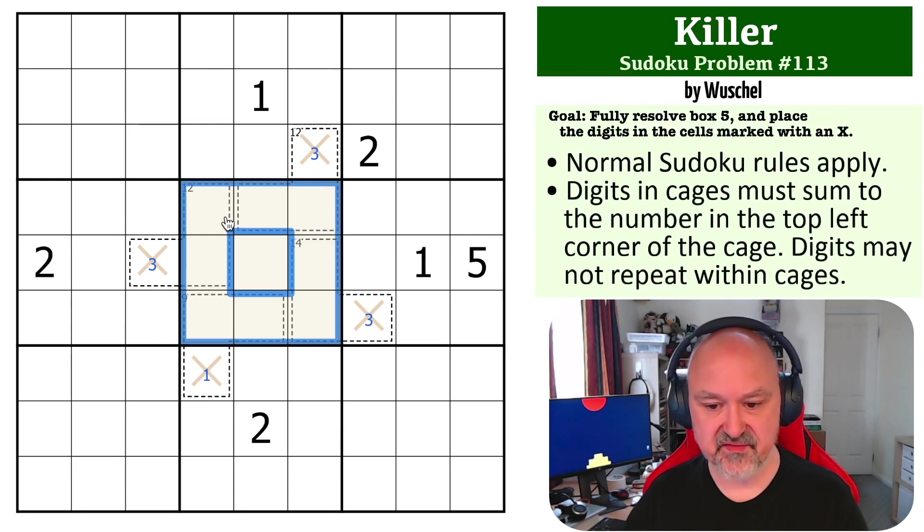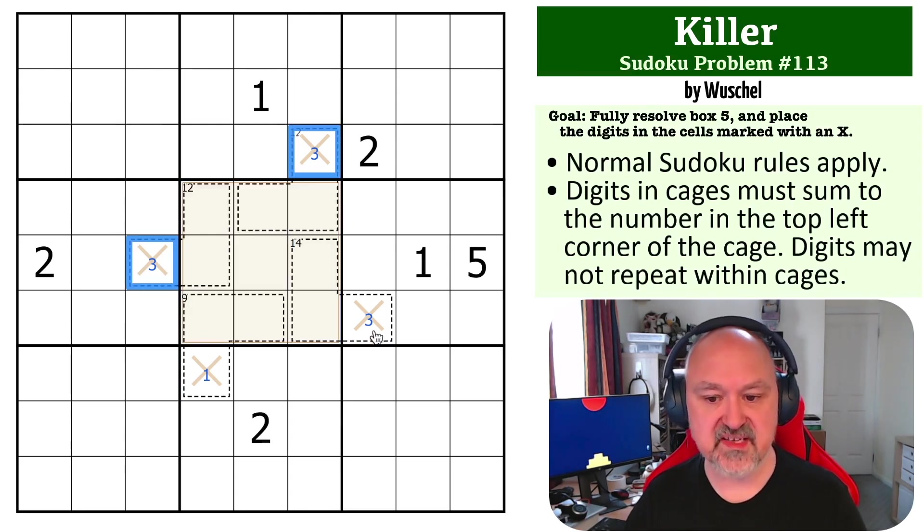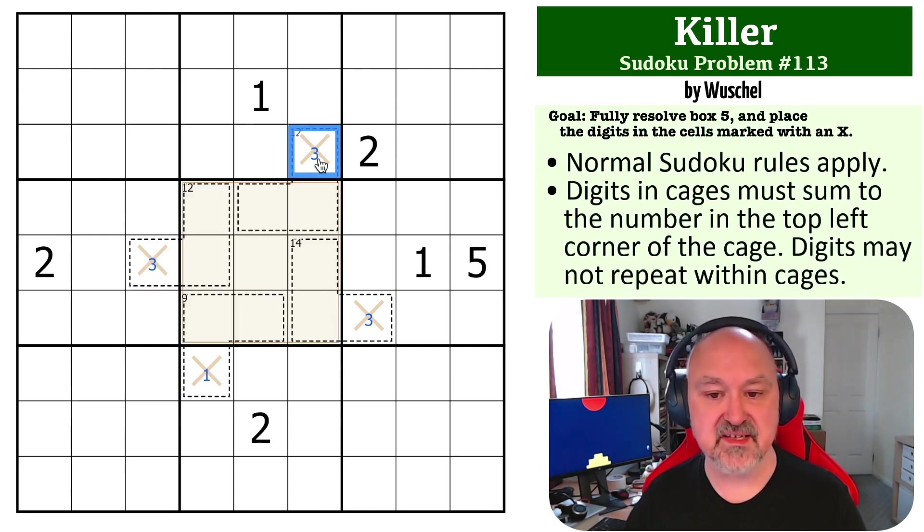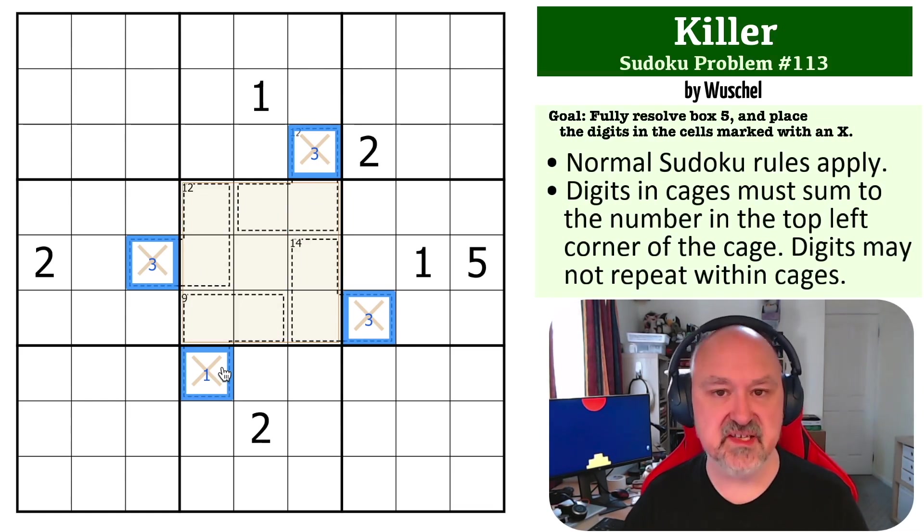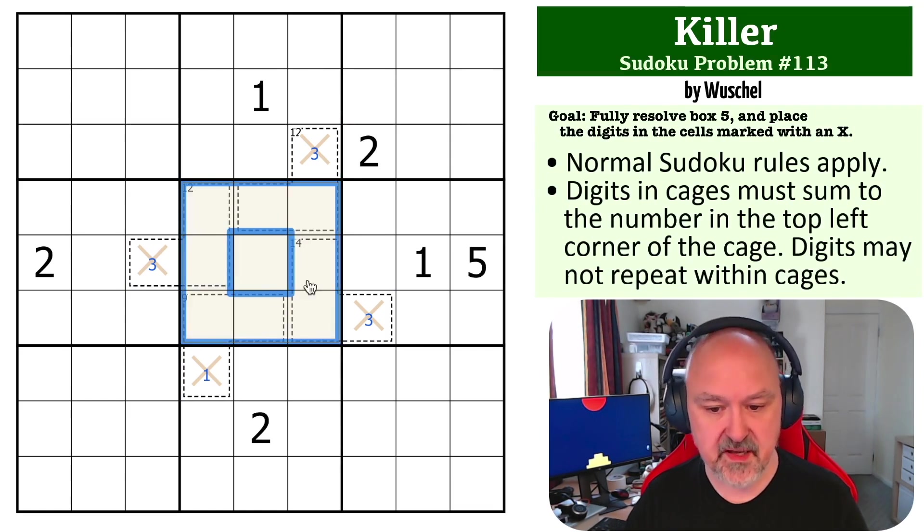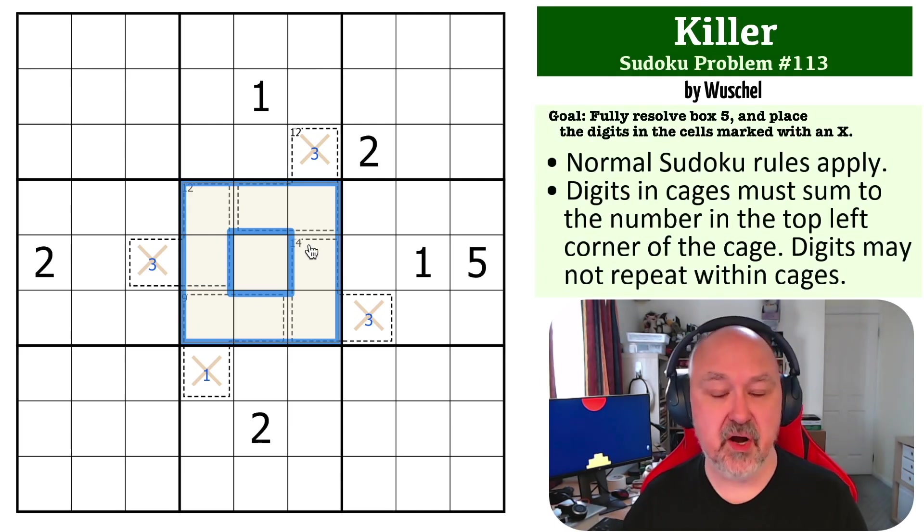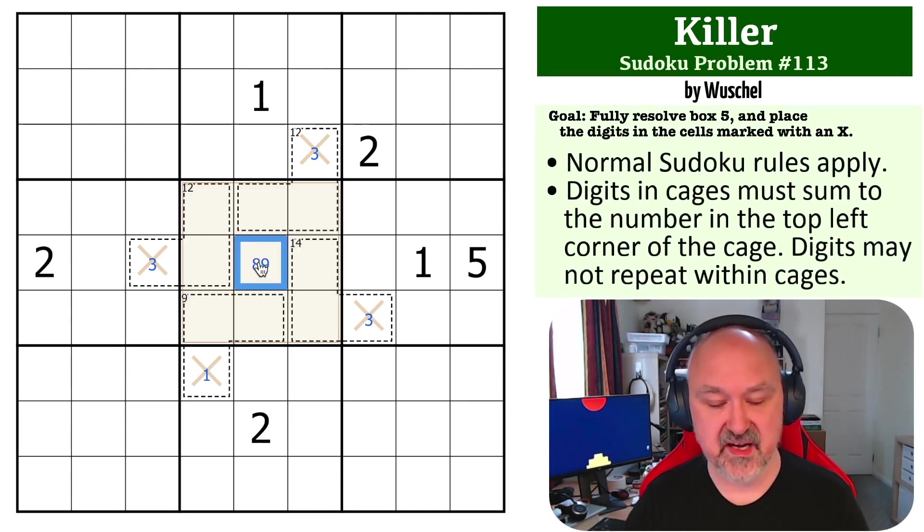They can't go above 37. If they go above 37, say these are even 38, 38 plus 10, which is the minimum these can be, would get us to 48, and the cage only sums to 47. So that's not going to work. These must be at maximum 37. But that means because the entire box must sum to 45, they can only be 36 or 37 and making up the total with an 8 or a 9.